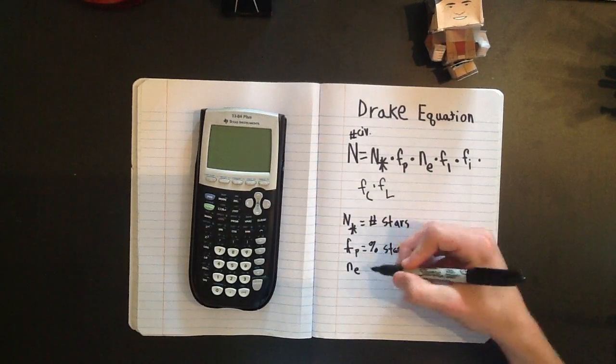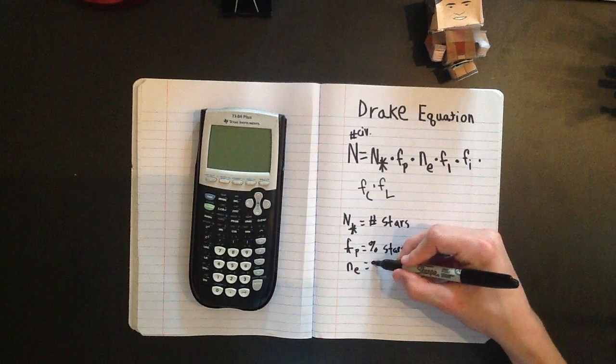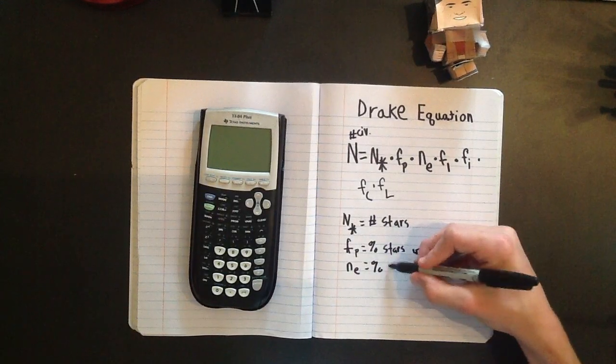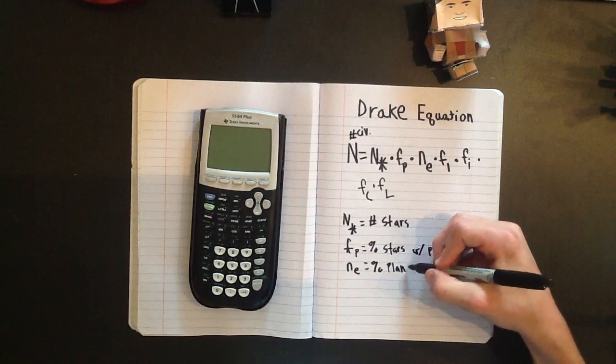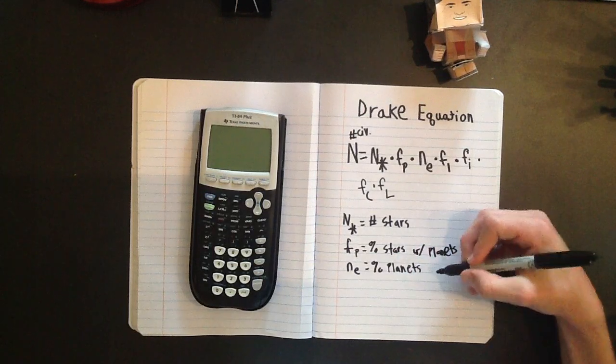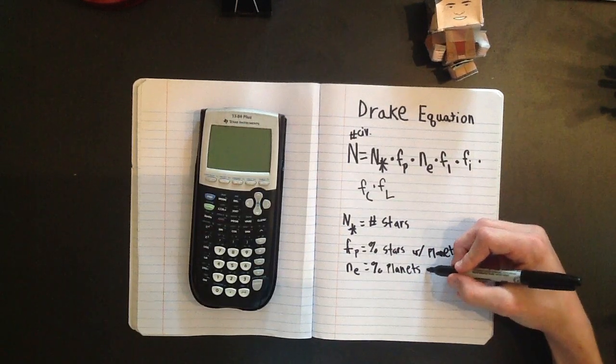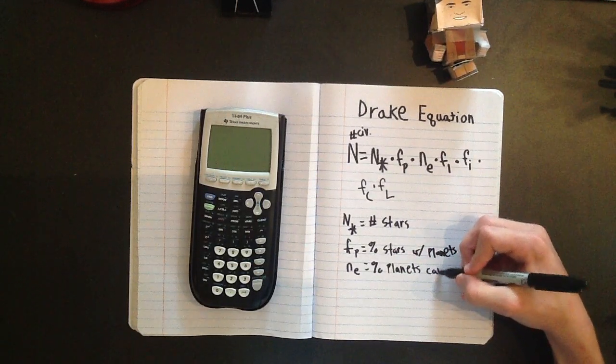N sub E is the fraction of those that can support life, so they're in the habitable zone that can have life.